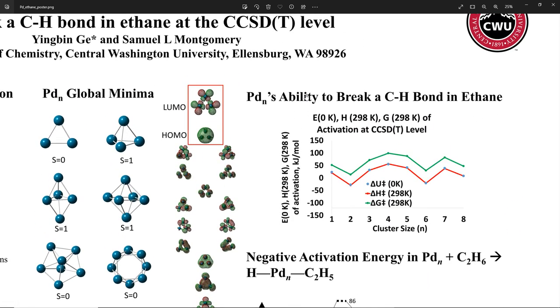We quantify the ability of the palladium clusters here. So we're looking at the internal energy of activation at 0K, enthalpy of activation gives energy of activation at room temperature. From this graph, we can see palladium 2, palladium 6, palladium 8 have lower enthalpy of activation than other sizes, so they are better catalysts.